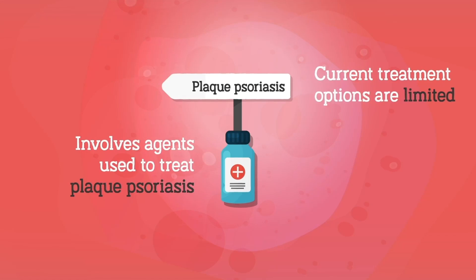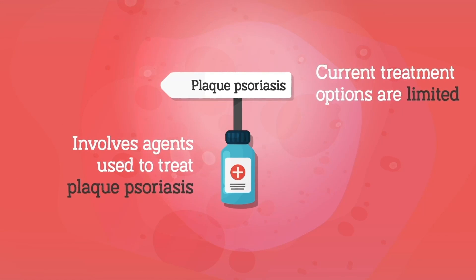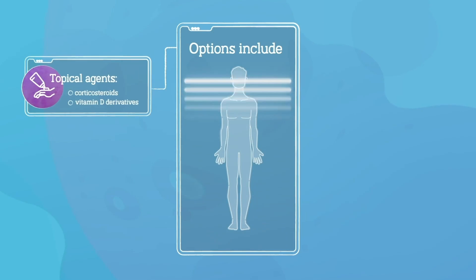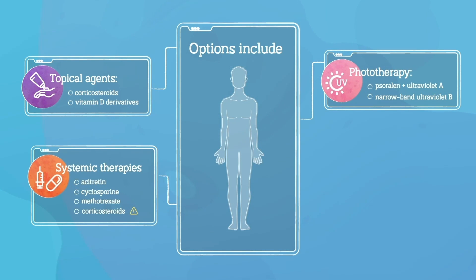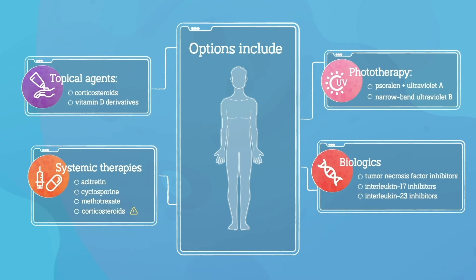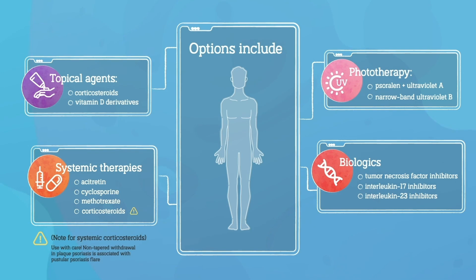The current range of treatment options for GPP is limited and generally involves agents used to treat plaque psoriasis. Options include topical agents, phototherapy, systemic therapies, and/or biological therapies. Systemic corticosteroids should be used with care, as their non-tapered withdrawal in individuals with plaque psoriasis may precipitate a pustular psoriasis flare.